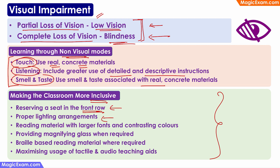Next, proper lighting arrangements. In case of children with low vision, bright lighting helps them read whatever is written on the board much more clearly. Reading material with large fonts and contrasting colors is also important. If you change the settings on your phone or laptop to accessibility mode, you will see that fonts become larger and colors also change to become more contrasting — that is because it helps children with low vision see properly. Similarly, even textbooks can use large fonts and contrasting colors wherever required.